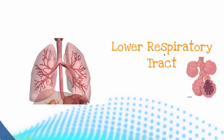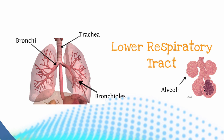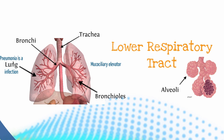Moving on, we're going into the lower respiratory tract. We have our trachea, then we have our bronchi moving into the bronchioles, and then the alveoli. The bronchioles start to get smaller and smaller, separating more and more, and they start to form these little grape seed-like capsules of alveoli. The mucociliary elevator is still active inside the bronchioles, bronchi, and trachea. And let's not forget that pneumonia is a lung infection — ultimately, pneumonia is an infection of the lower respiratory tract. If someone says they have an upper respiratory tract infection, it is not pneumonia.